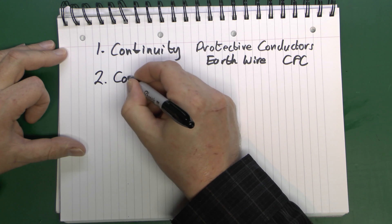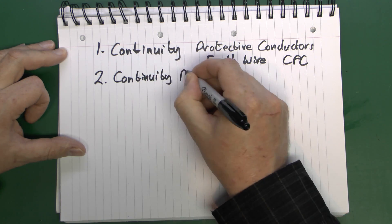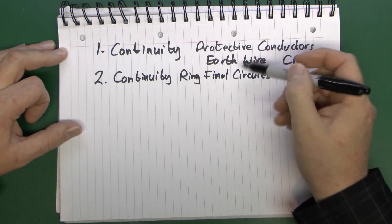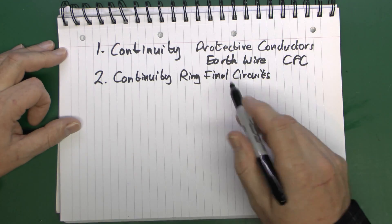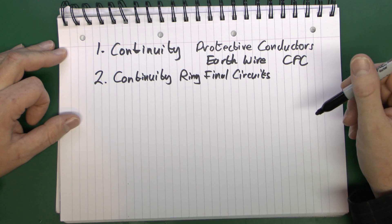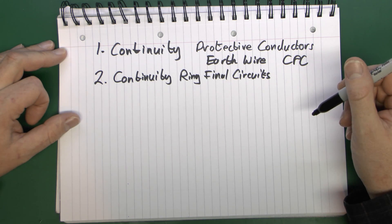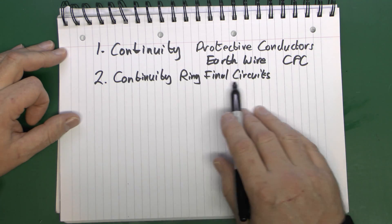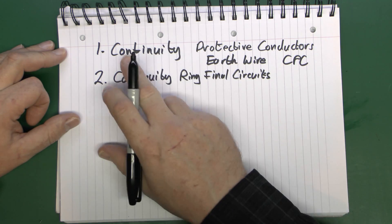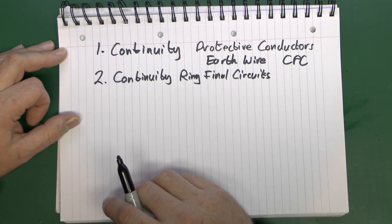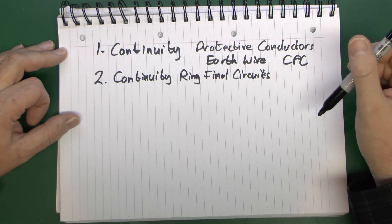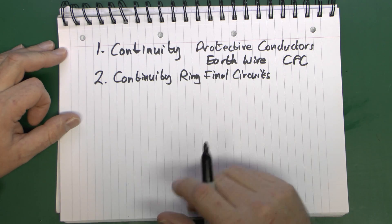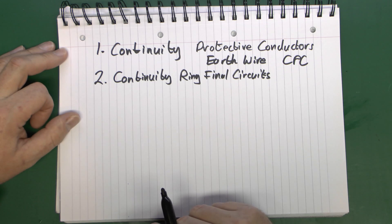Test number two is also continuity, but for ring final circuits. This actually covers the line, neutral and earth — both to make sure it's a ring and that they are connected in the correct place. One of these tests is definitely compulsory, so if you've got a ring circuit you're going to be using this one. For all other circuits you'll be doing test one. Of course, you only do the ring final test if you have a ring final circuit, and most circuits are not those.